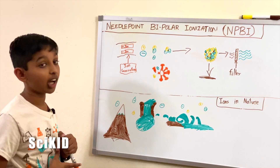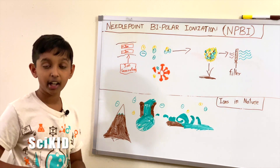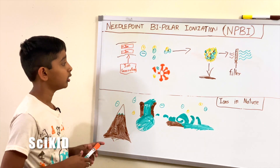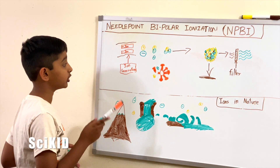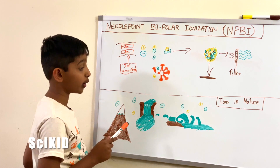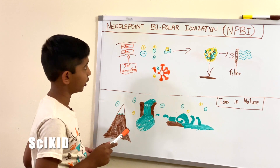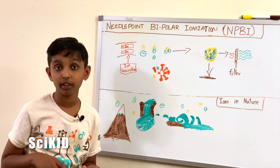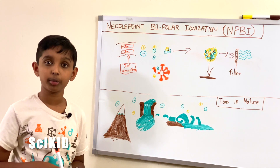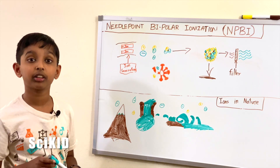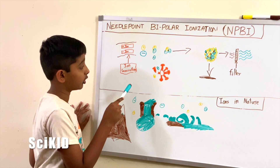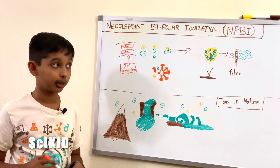NPBI uses ions. Ions are positively or negatively charged particles. To make these, they use ion generators. To be specific, they use I-wave ion generators. For the positive ion generator, it takes away an electron from a particle. Electrons are negatively charged. A negative ion generator adds an electron to a particle.